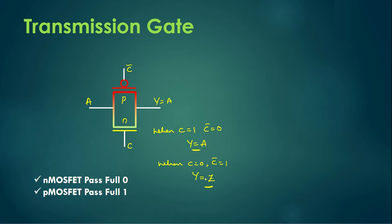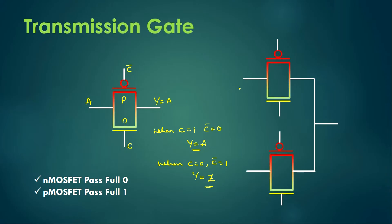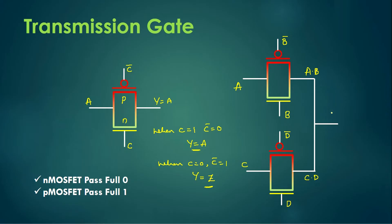By using this method we can construct any CMOS digital circuit. Let us understand what happens when we connect transmission gates in parallel. Let the input pass value be A and B, with B bar as control. Passing another value C with control input D bar — the first transmission gate provides output A·B and the second provides C·D. Connecting the two outputs gives A·B + C·D as the final output. By using this method we can construct any digital circuit.